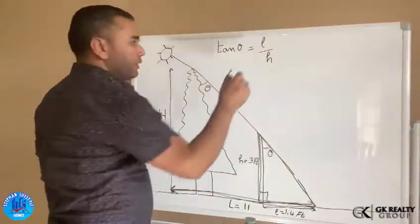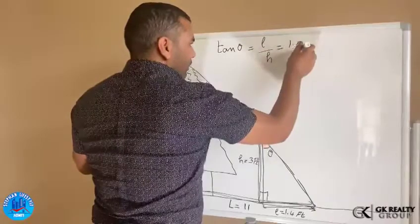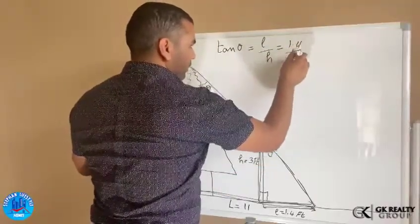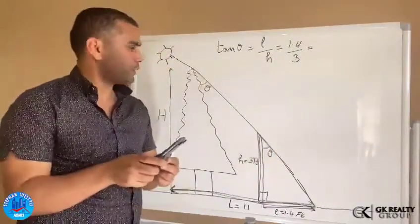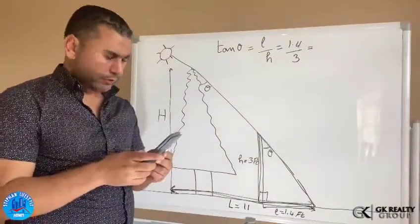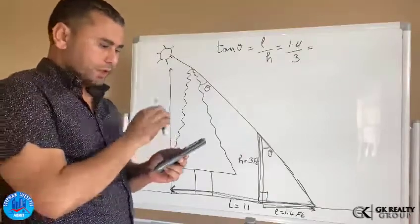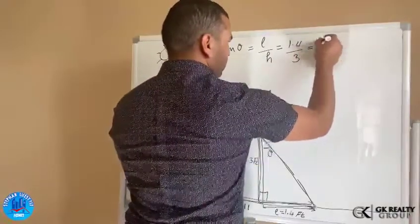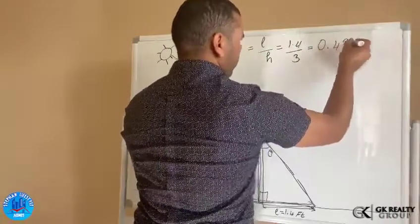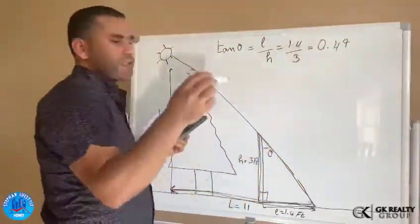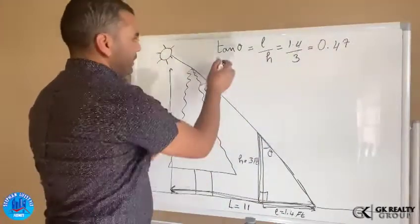So it will be 1.4 over 3. So let's see how much it's going to be. 1.4 over 3 is going to give us 0.47. We round it. It's 0.4666, but we round it to 0.47. Now we have tangent theta is equal to 0.47.